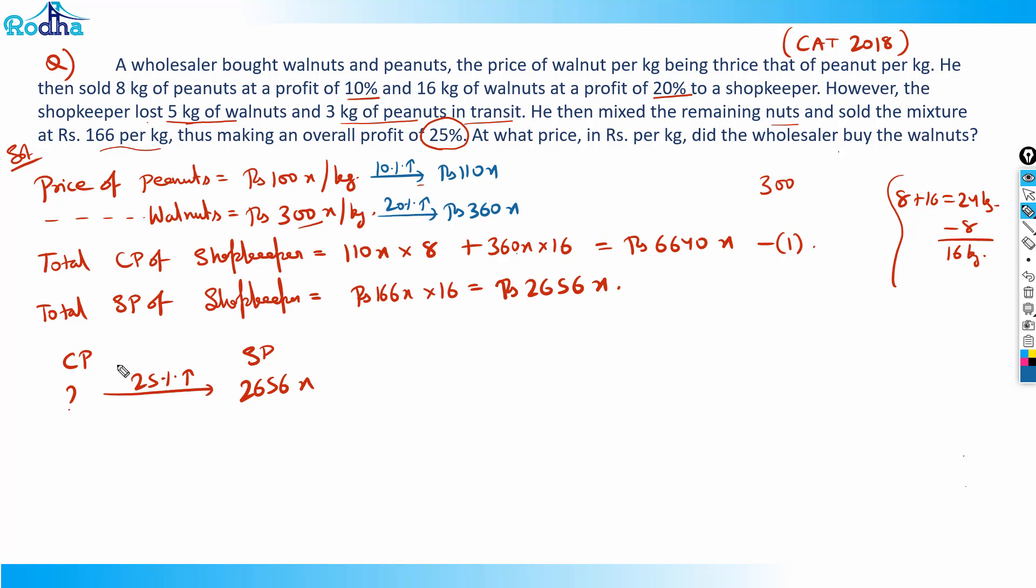From CP to SP, a 25% increase is 1/4 increase, so from SP to CP it should be 1/5 decrease, which is explained in the percentage chapter. 2656 decreased by 1/5: double 2656 to get 5312, divide by 10 to get 531.2. Decrease 531.2 from 2656 to get 2124.8. So the cost price of shopkeeper is Rs 2124.8x.